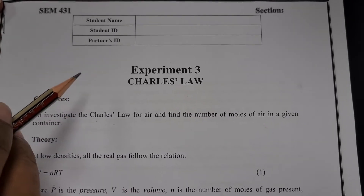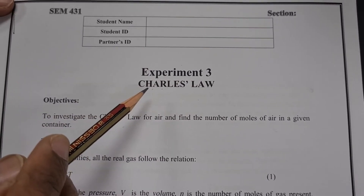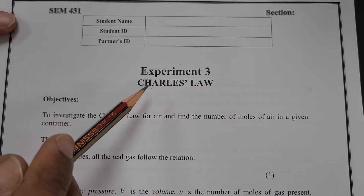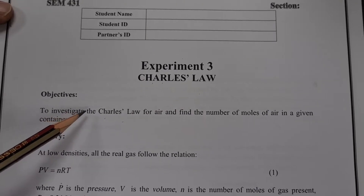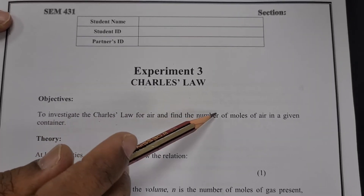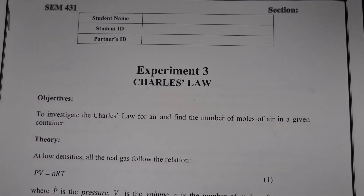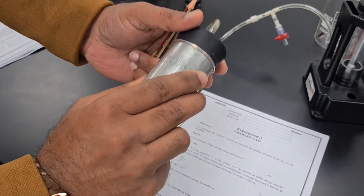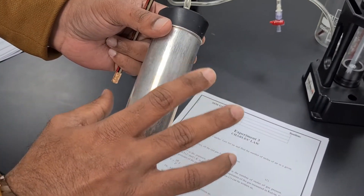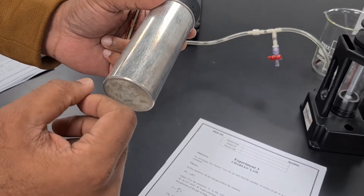Today I am going to explain Experiment 3 of Physics 2: Charles Law. You already studied the concept of Charles Law in Chapter 19. The objective of today's experiment is to investigate Charles Law and then find the number of moles of gas — or moles of air — present inside the container. Through Charles Law, we are going to find how many moles of air molecules are present inside this container.